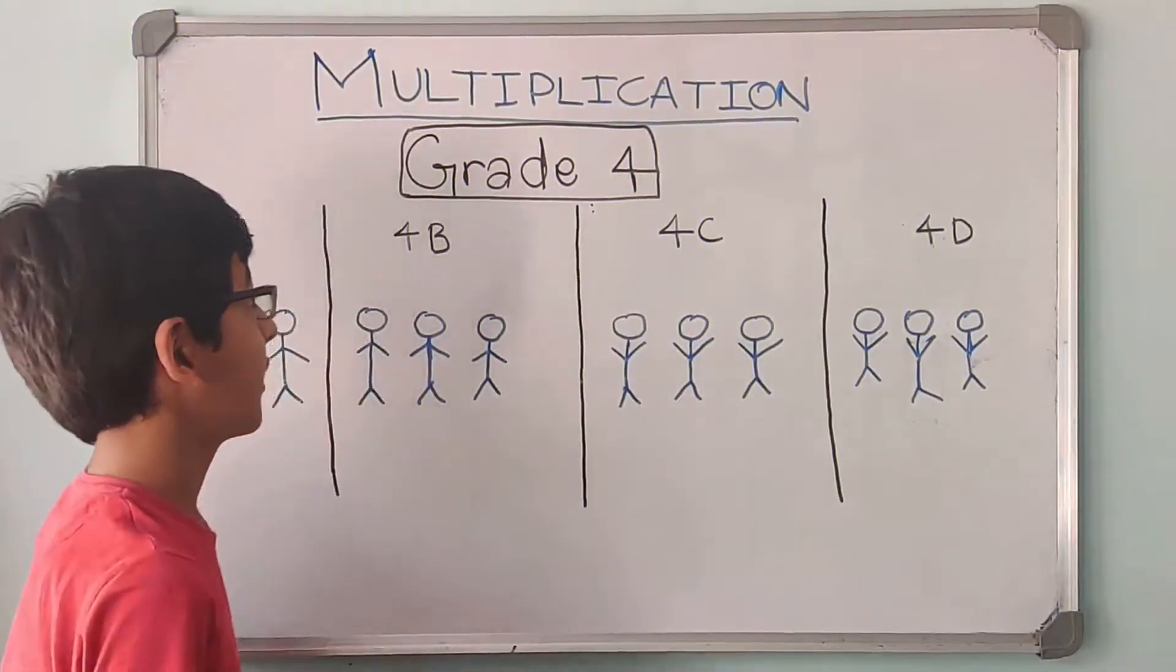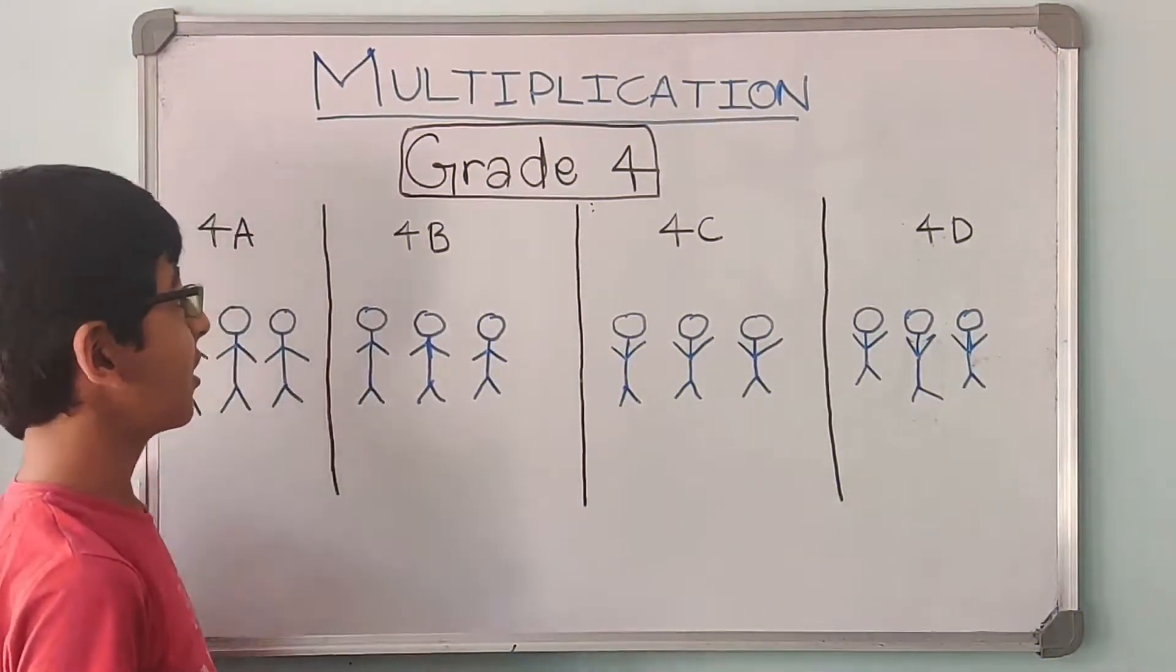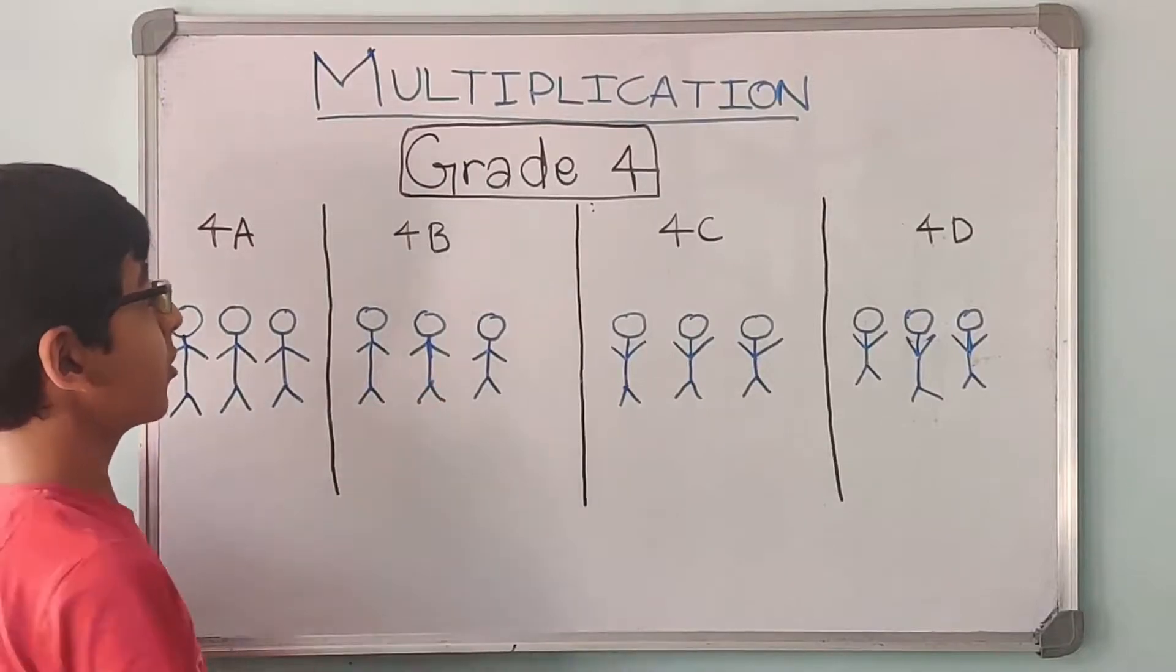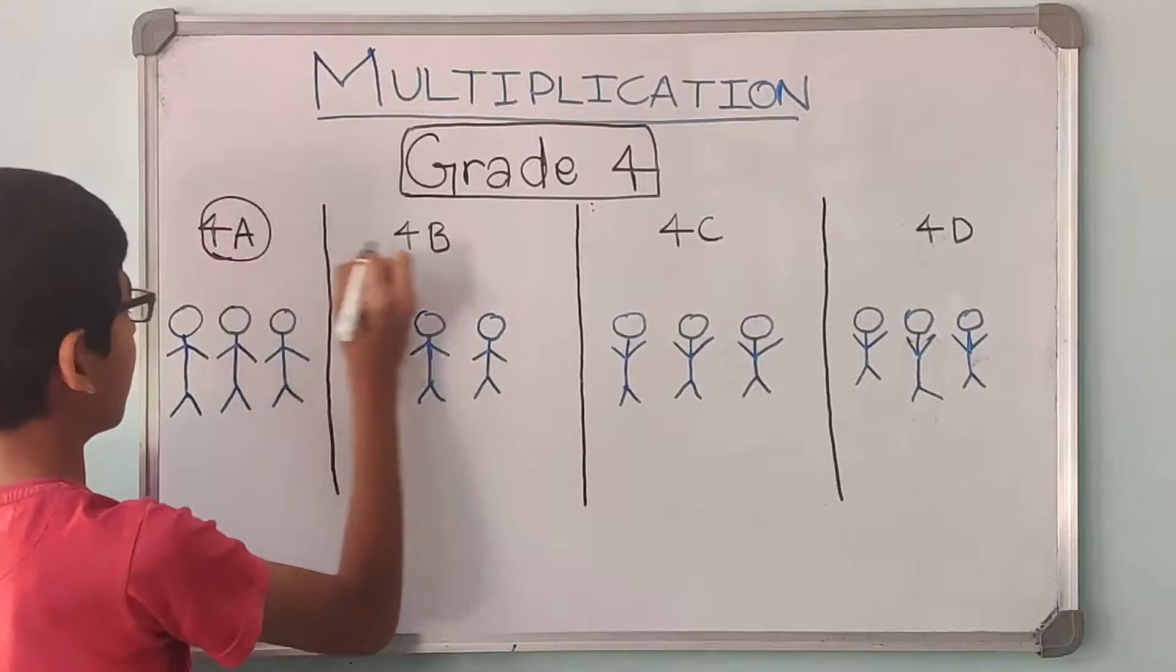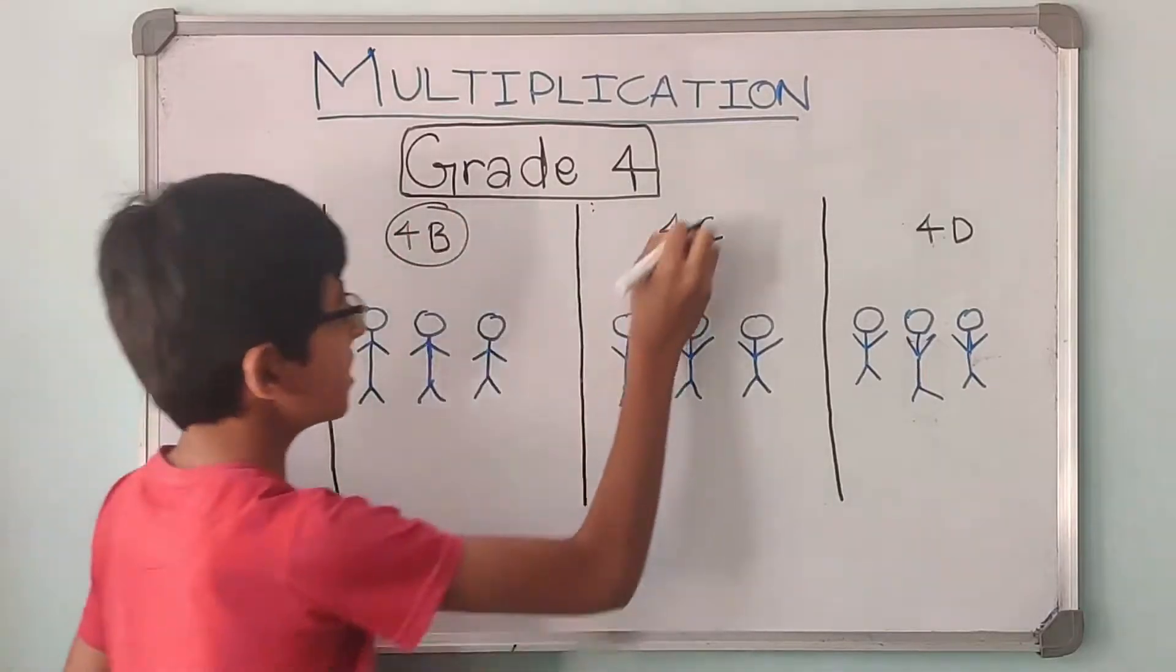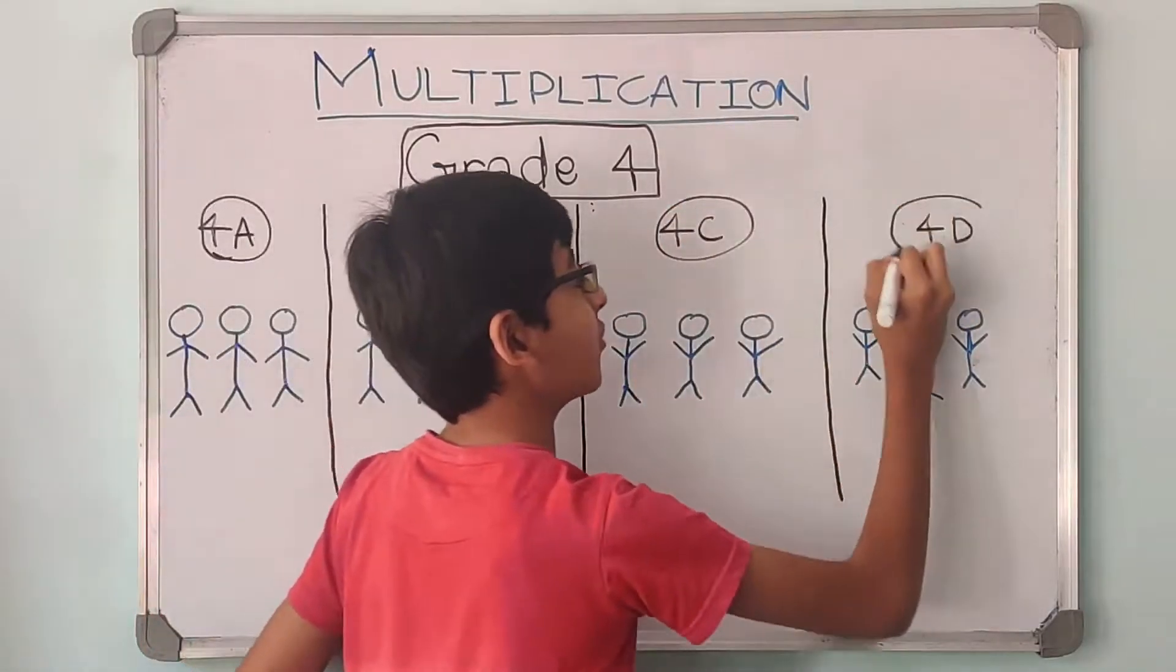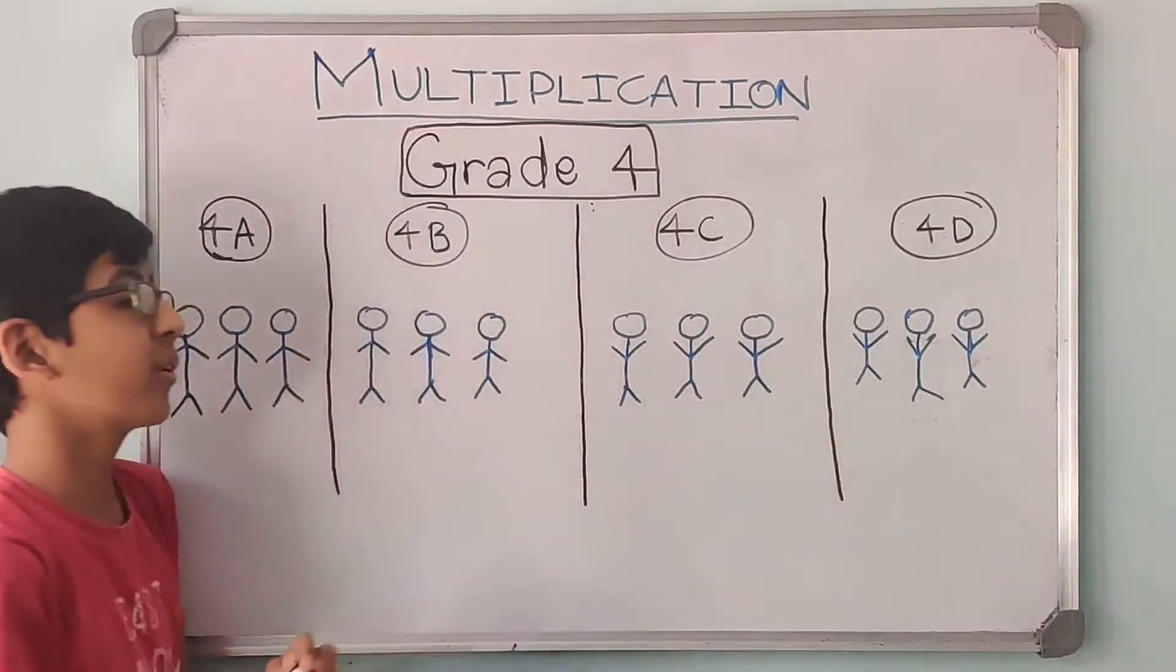Now let us understand what is multiplication. So in a school there was grade 4. Grade 4 had 4 sections: 4A, 4B, 4C and 4D. These were the 4 sections.